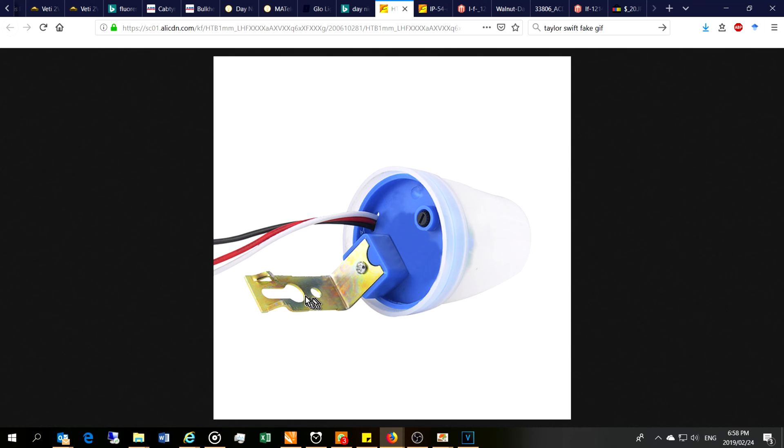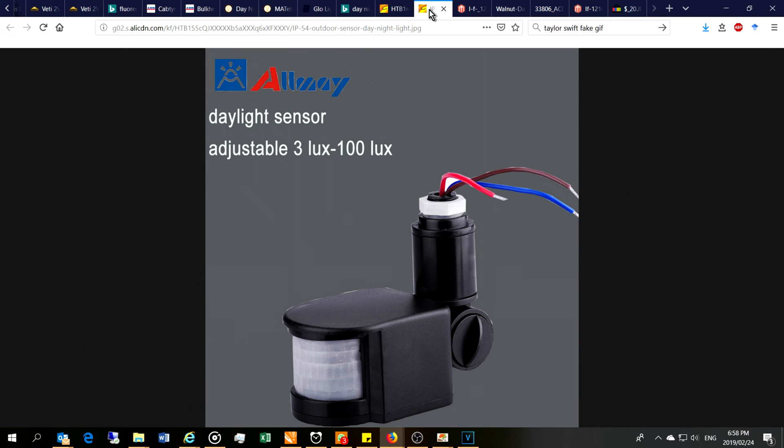Okay, so here's a day-night switch. You can see the format: there's the bracket for putting on the wall, there's the wires coming in, and there's a lux adjustment to adjust the brightness that it will activate on. You can see the clear cap so that the light can penetrate through.